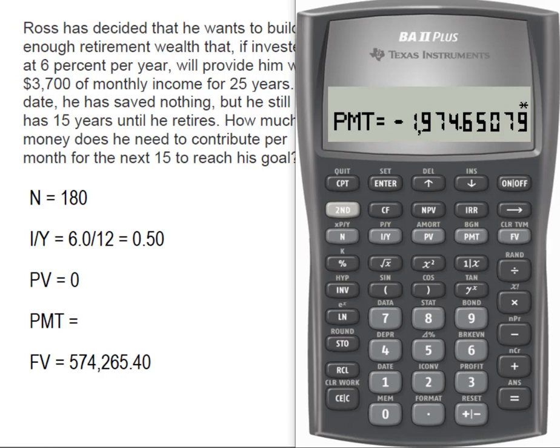And we come up with $1,974.65. So in order to have 25 years worth of monthly income, he's going to need to put away this $1,974 every month for the next 15 years until he retires.